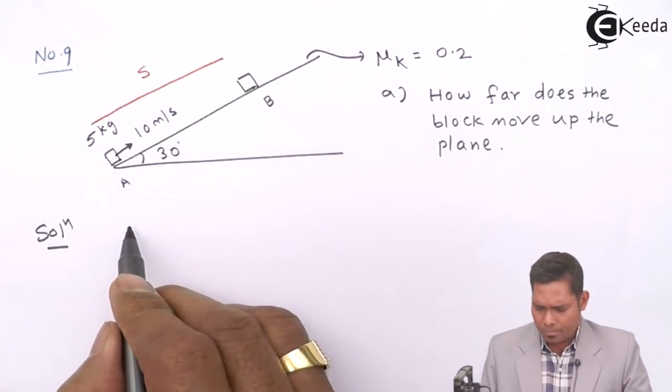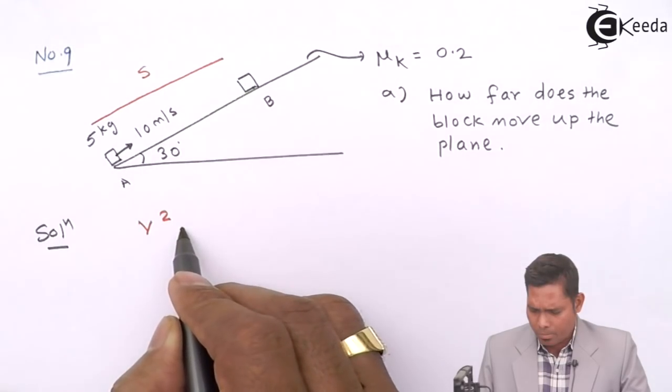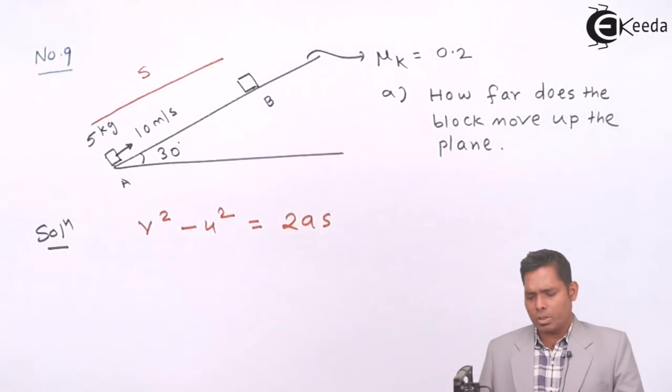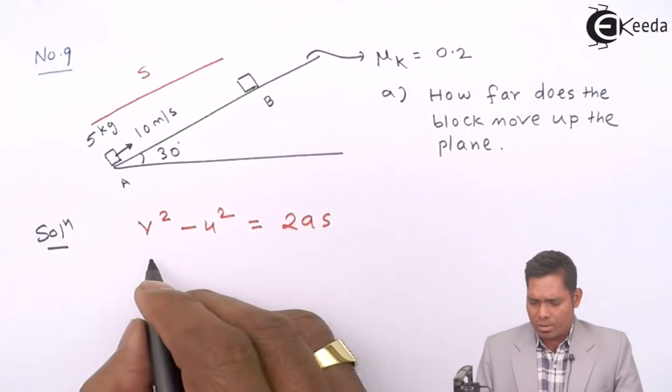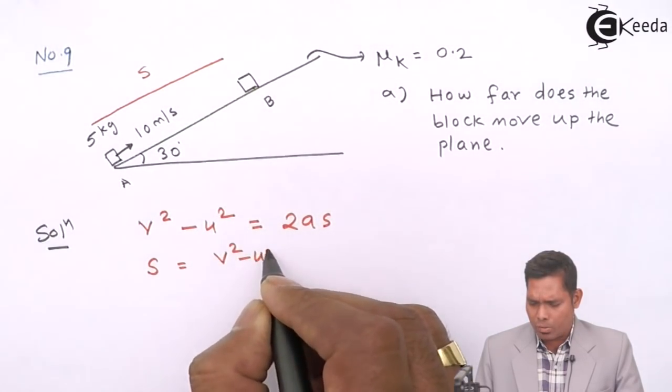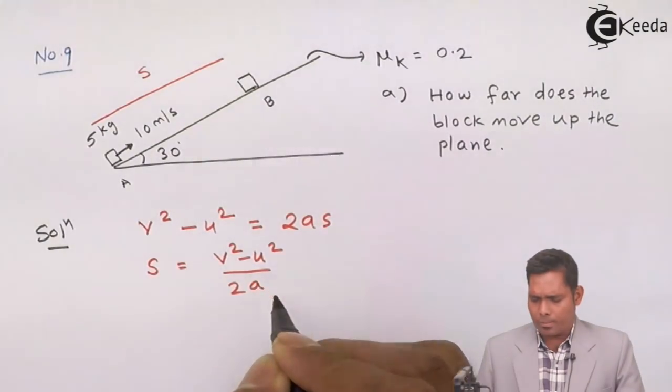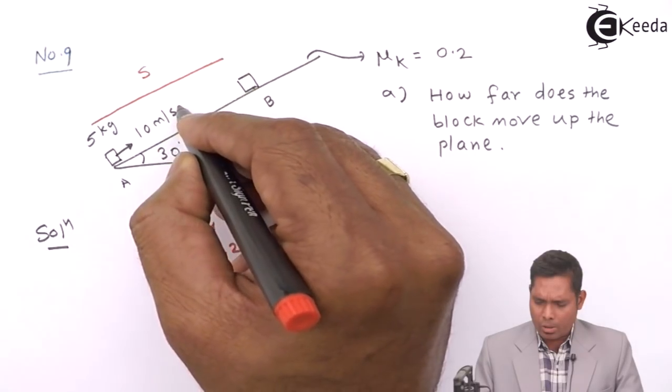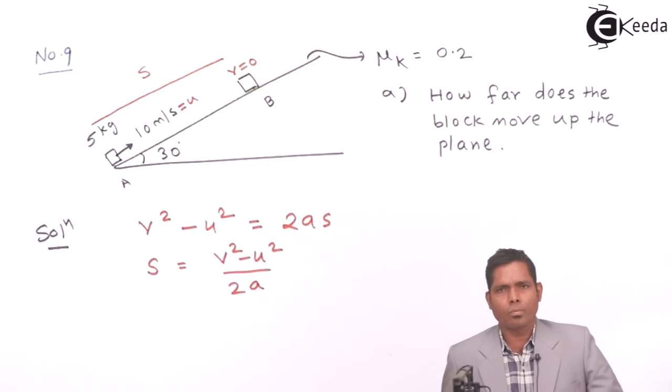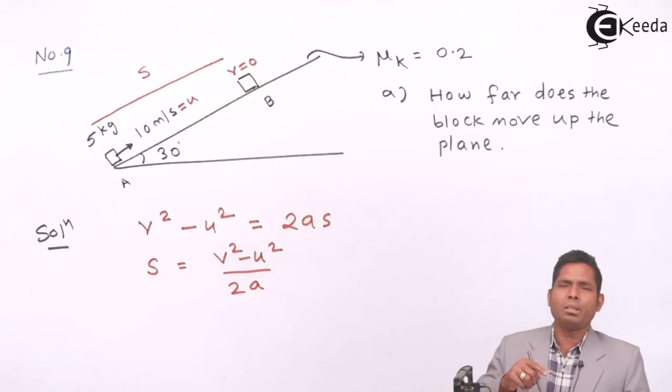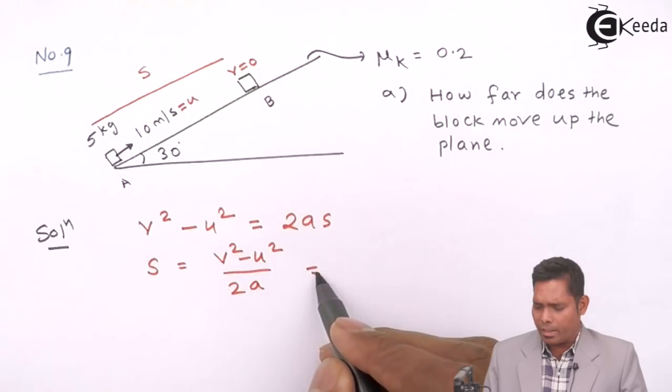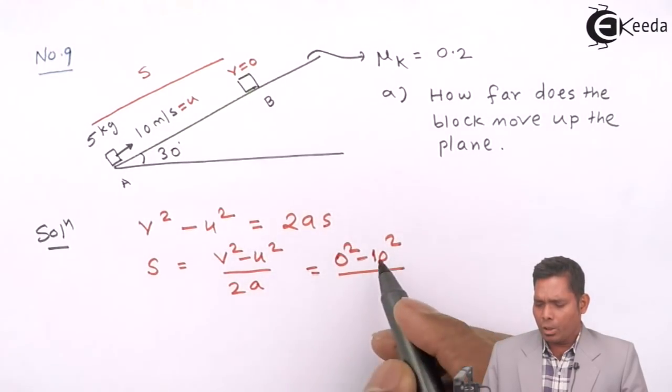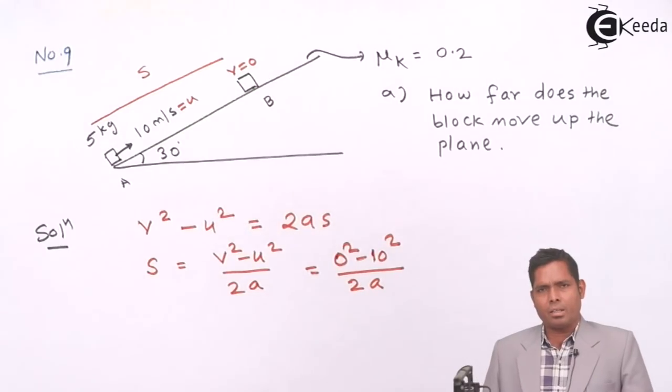I will use V² - U² = 2AS. This equation I will use. I am interested in S, so S will be V² - U² divided by 2A. This is the initial velocity, it is 10. So U is 10. Now this is your U, and final velocity will become 0. So I write here 0² - 10² divided by 2 into A.